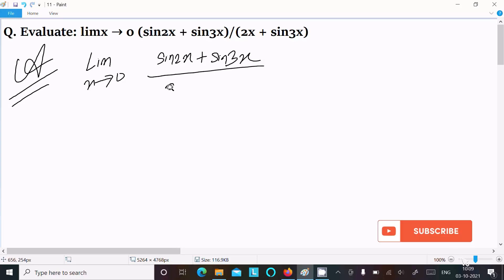Thereafter, 2x plus sin 3x. So we can easily achieve the output if I divide with x in the numerator and the denominator. Okay, so writing here, dividing x to numerator and denominator.